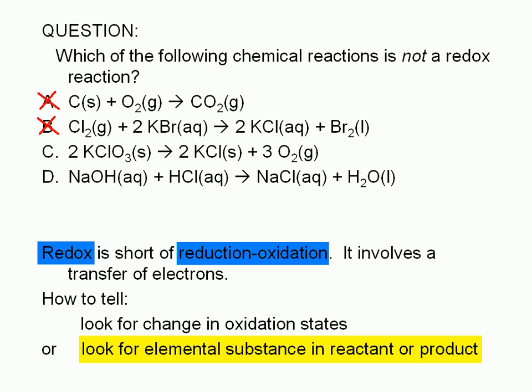In choice C, we have one elemental substance involved as a product, oxygen. Therefore, the decomposition of potassium chlorate to potassium chloride and oxygen is also a redox reaction. Any decomposition reaction where at least one of the products is an elemental substance is also a redox reaction.